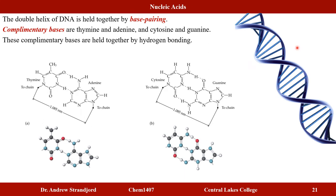The distance between the two DNA strands is always the same even though different base pairs are formed. Measuring from a common nitrogen to nitrogen point, thymine-adenine pairs measure 1.085 nanometers, and cytosine-guanine pairs also measure 1.085 nanometers. This equal spacing results in the nearly perfect double helix formed when complementary bases come together by hydrogen bonding.